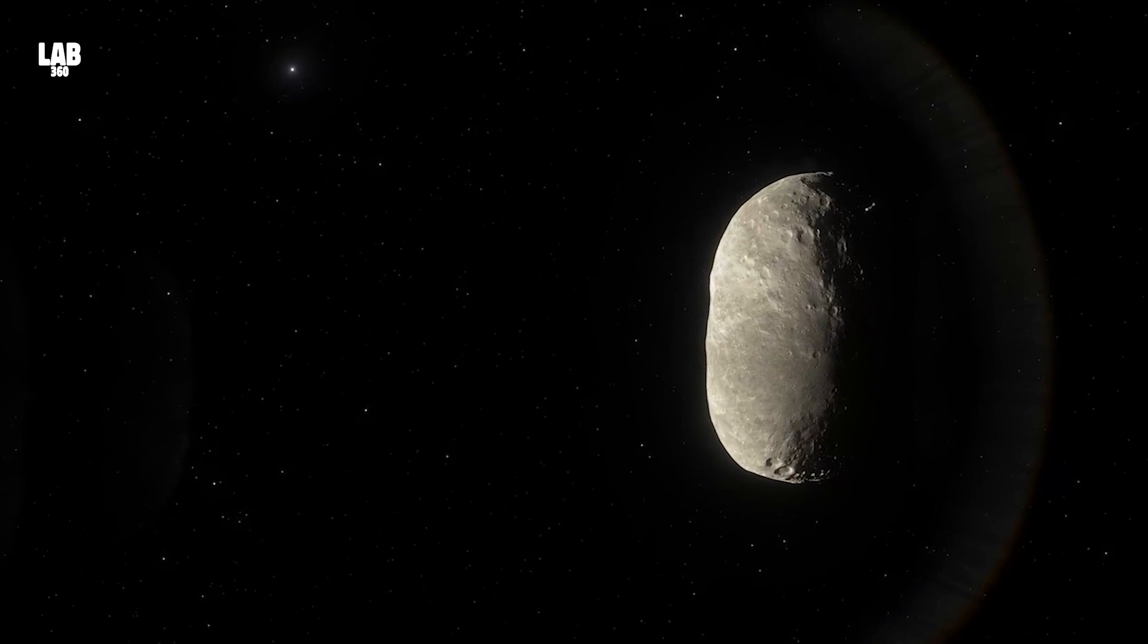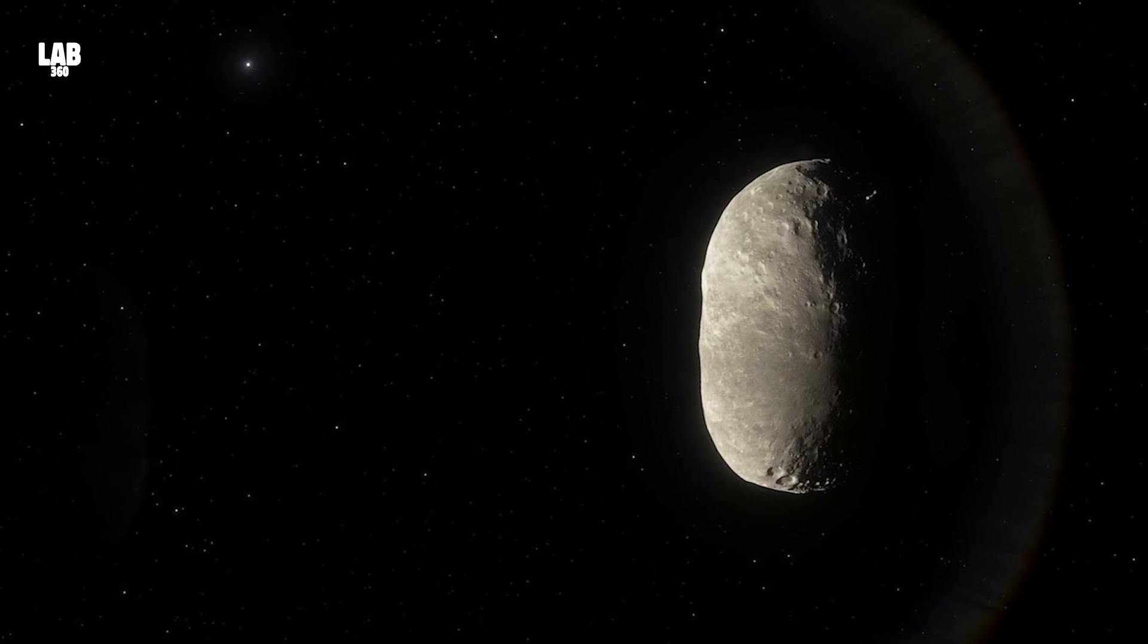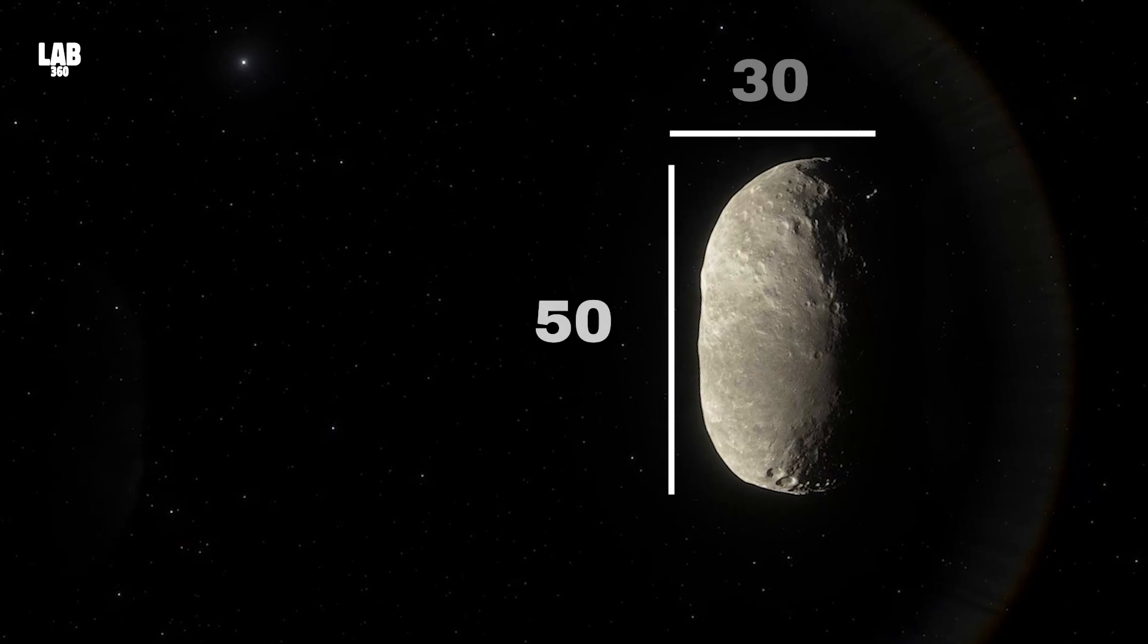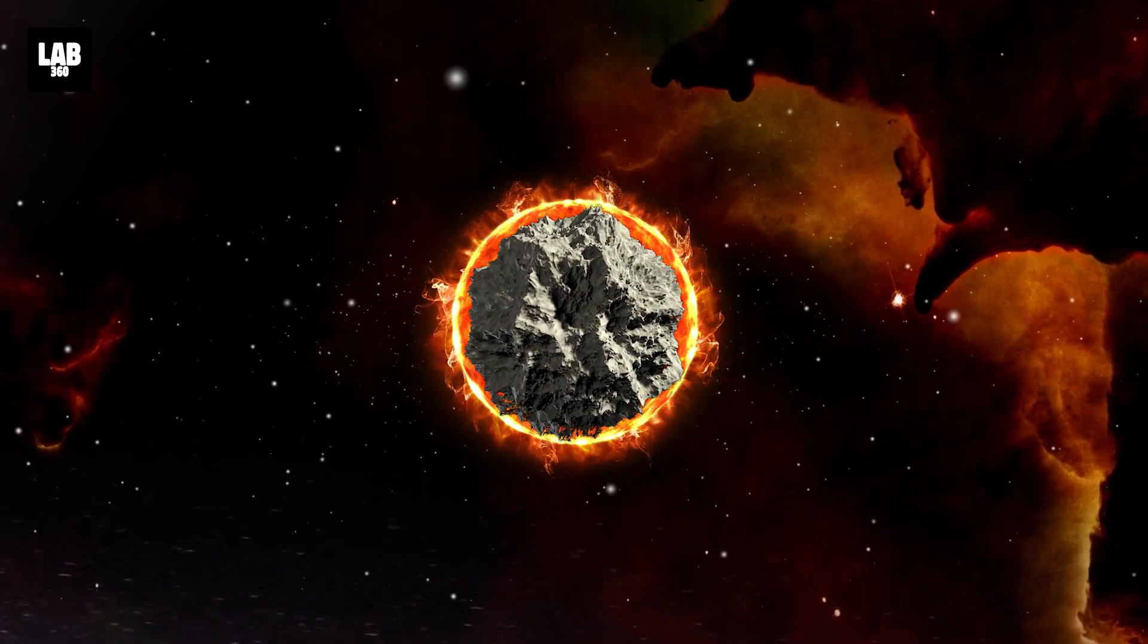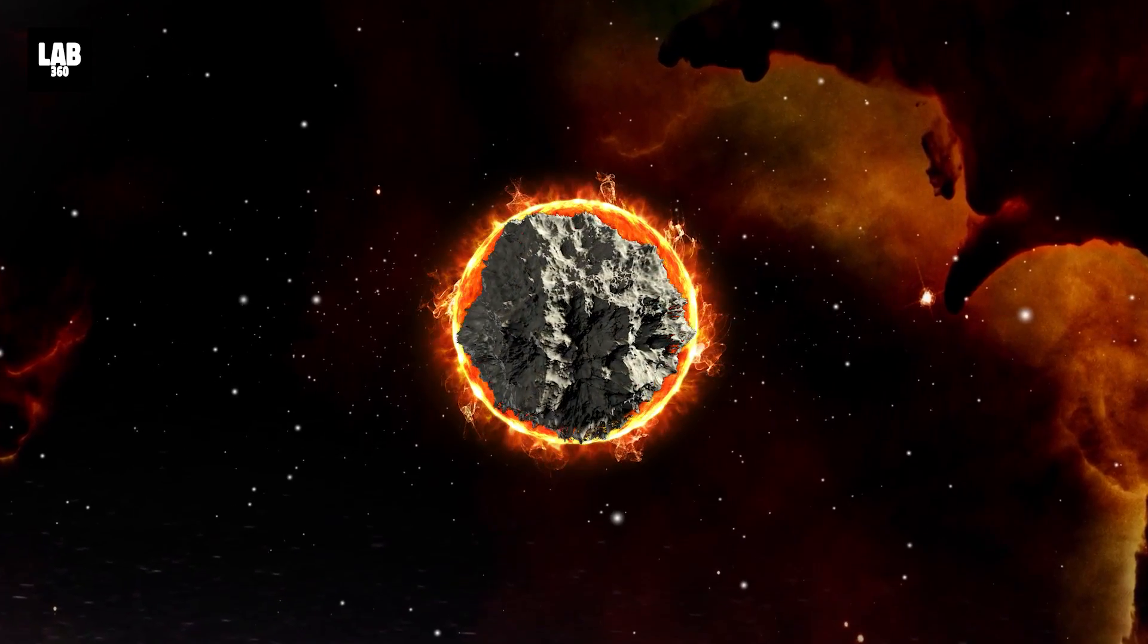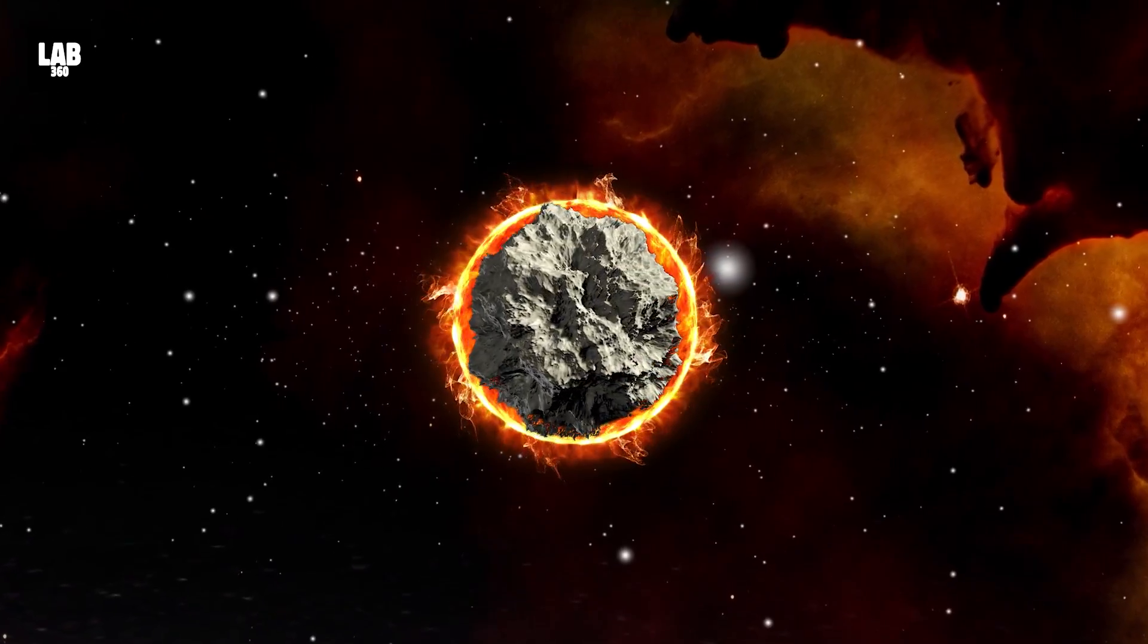Being oval in shape, 319 Leona measures some 50 by 34 miles in size. Yet it was able to cover Betelgeuse in the night sky, which goes to show how distant the giant star is from us.